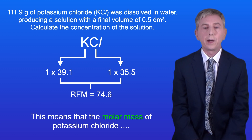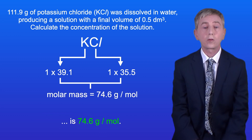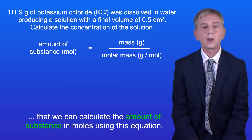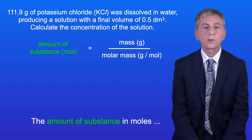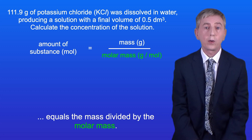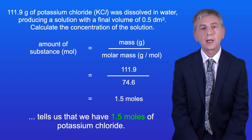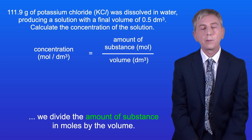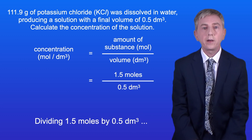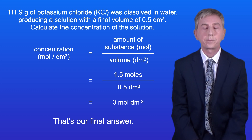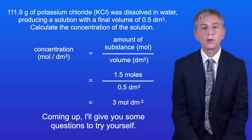Adding these together gives us a relative formula mass of 74.6, meaning the molar mass of potassium chloride is 74.6 grams per mole. Using the equation — amount of substance in moles equals mass divided by molar mass — dividing 111.9 by 74.6 gives us 1.5 moles of potassium chloride. Dividing 1.5 moles by 0.5 decimetres cubed gives a concentration of 3 moles per decimetre cubed. Coming up, I'll give you some questions to try yourself.